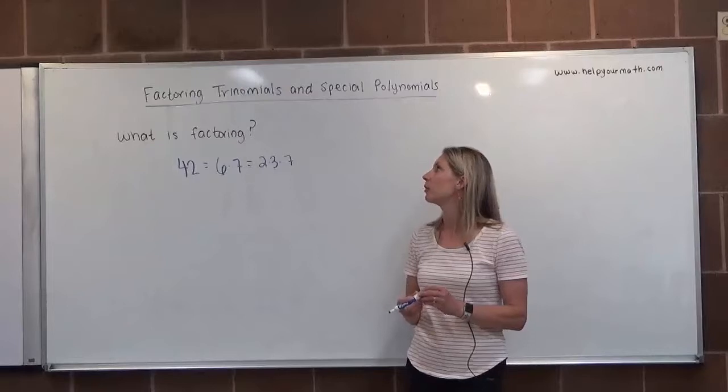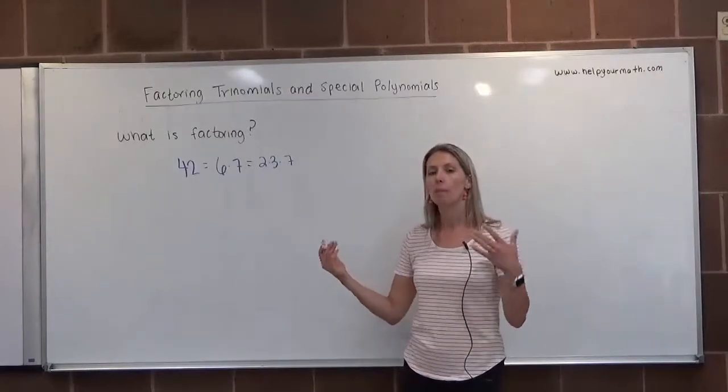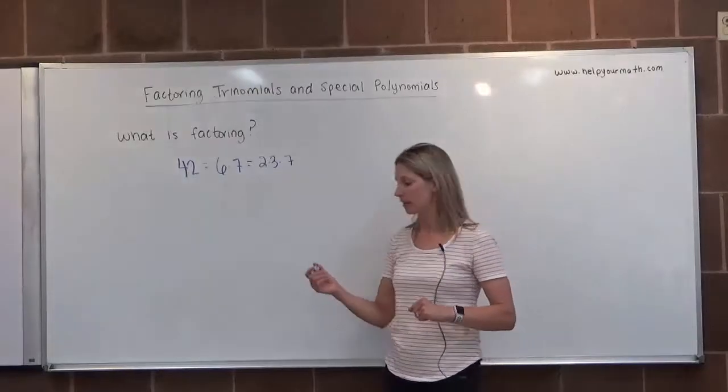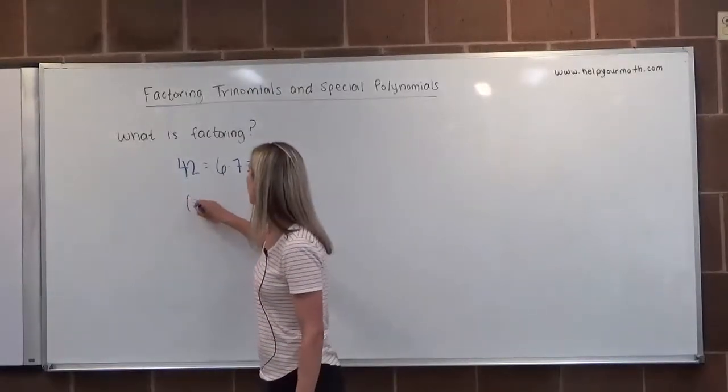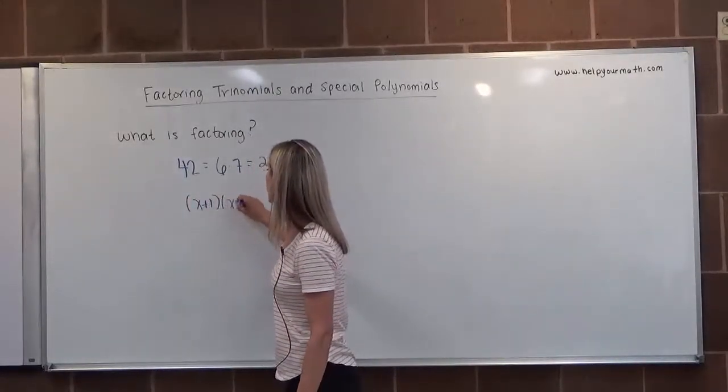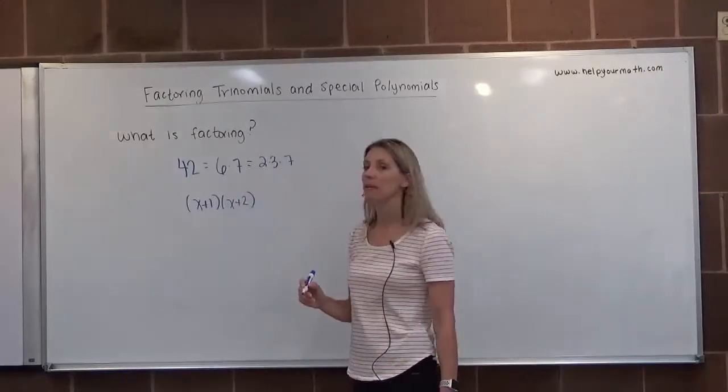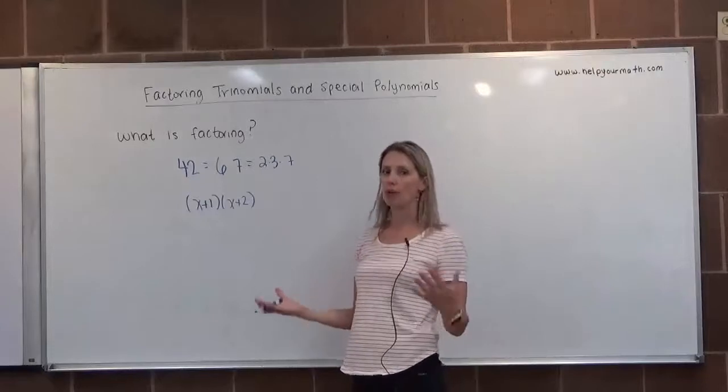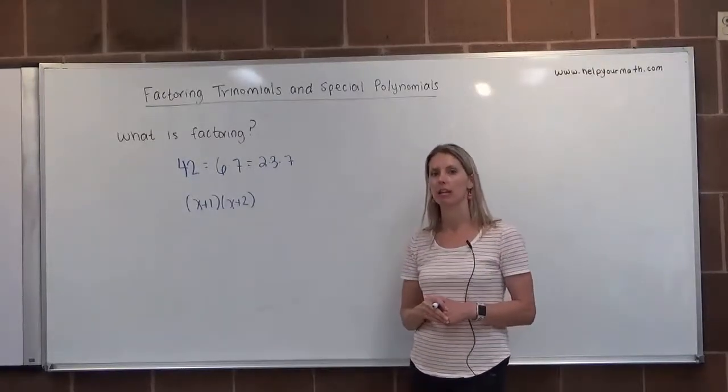We're going to look at factoring polynomials. When we see a polynomial that's factored, it actually looks like something that should be multiplied. So if you see something like x plus 1 times x plus 2, that would be what's called the factored form of that polynomial. And that's where we're going to look at all the different strategies for factoring in the next few videos.